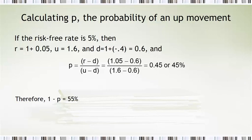Therefore, the complement of that is the 55%. And these are the probabilities that we're going to be using for the moving up and moving down in the tree.